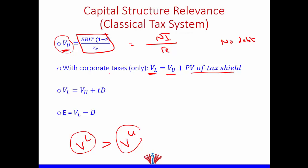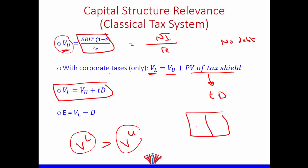The formula for the present value of the tax shield is the tax rate multiplied by the debt amount. Therefore, the value of the levered firm equals the value of the unlevered firm plus the tax rate multiplied by the debt amount: VL = VU + (T × D).